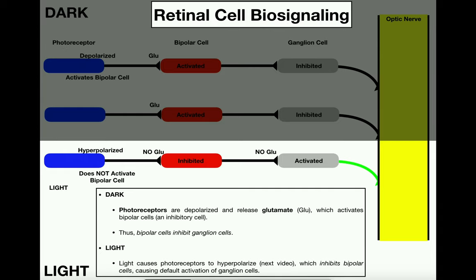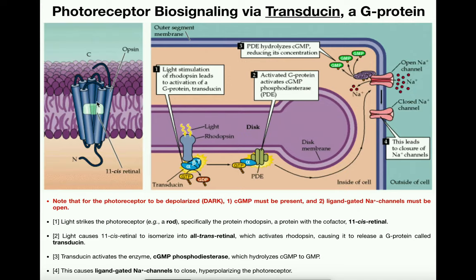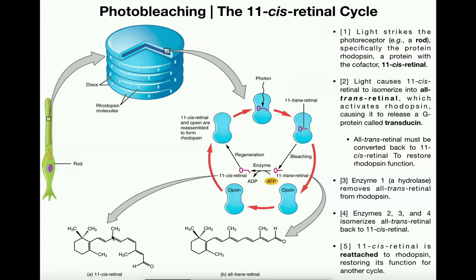To understand the photoreceptor cell, they have a protein embedded in one of their inner membranes — what's called a disc membrane, shown here in purple. In this membrane, they have a protein called opsin. Opsin has a cofactor called 11-cis-retinal. This is a molecule — here's its structure on the next slide.